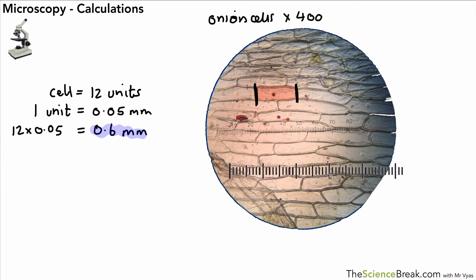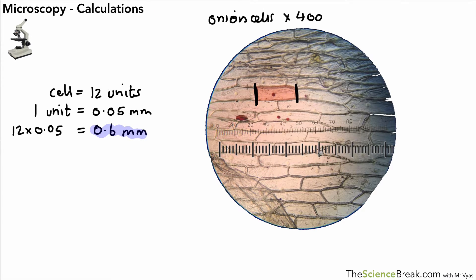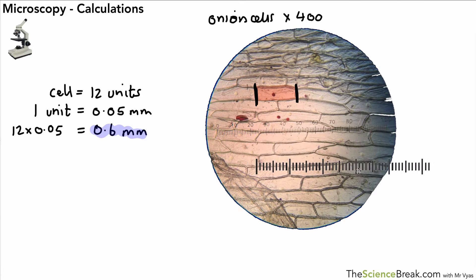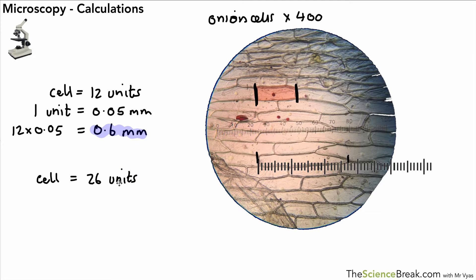Let's have a go at doing one more. We can measure that cell there, it's from that distance to there, the length of that cell. If you can see that you can have a go yourself by pausing now. I've got cell size in units as 26, so our arbitrary units is 26.